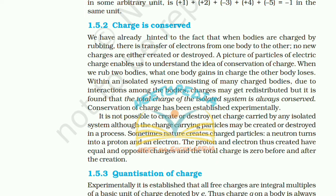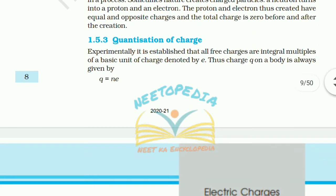1.5.2 Charge is Conserved. When bodies are charged by rubbing, there is transfer of electrons from one body to the other — no new charges are created or destroyed. When we rub two bodies, what one body gains in charge the other body loses. Within an isolated system consisting of many charged bodies, charges may get distributed but the total charge of the isolated system is always conserved. Conservation of charge has been established experimentally. It is not possible to create or destroy net charge carried by an isolated system, although the charge-carrying particles may be created or destroyed in a process.